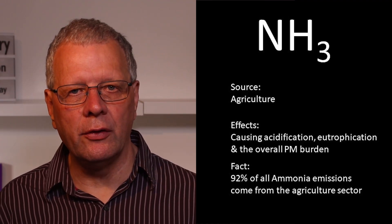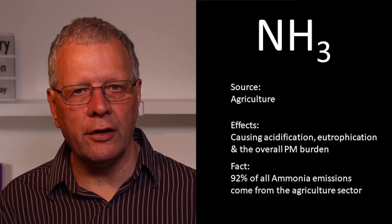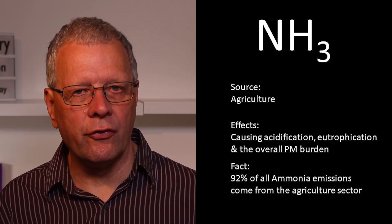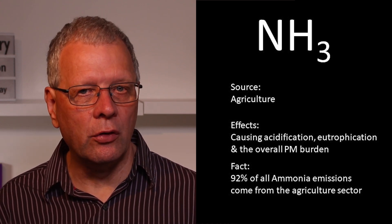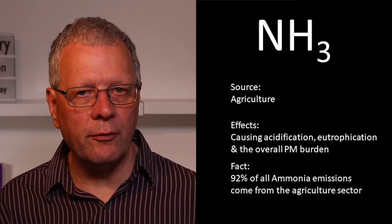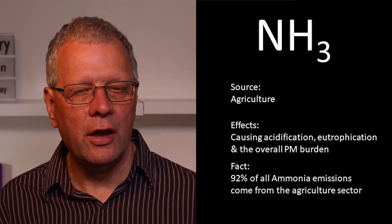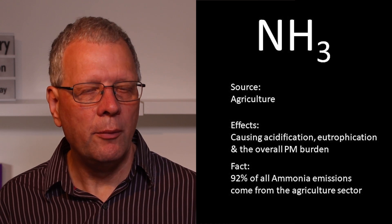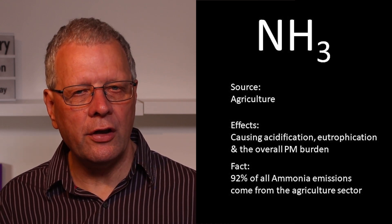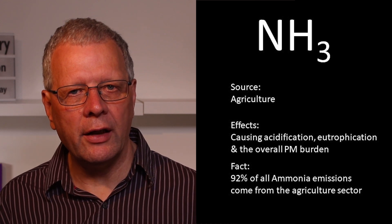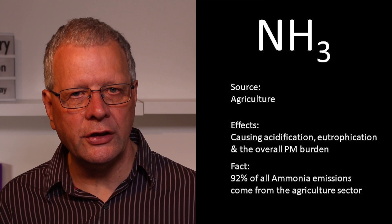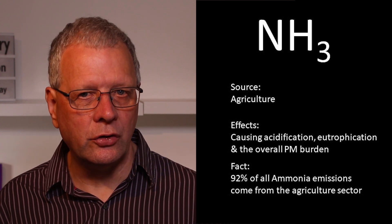Ammonia is an air pollutant very much linked to the agricultural industry, where it accounts for 92% of all ammonia emissions. These emissions come from the decomposition of fertilisers or manure products, and these decomposition products can affect rivers and streams through acidification and eutrophication.